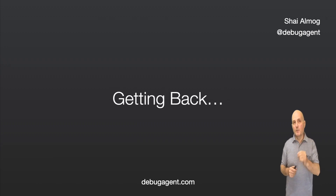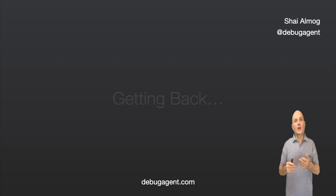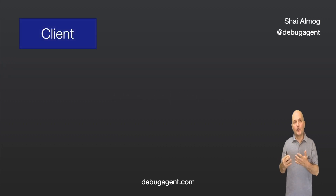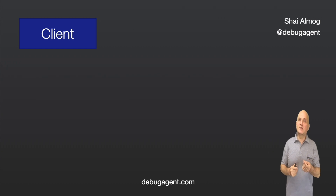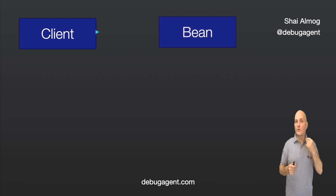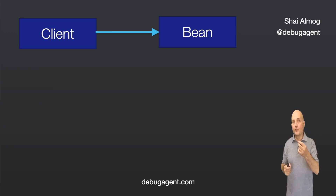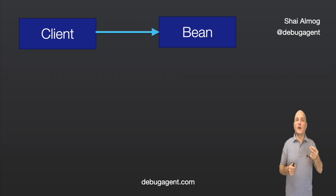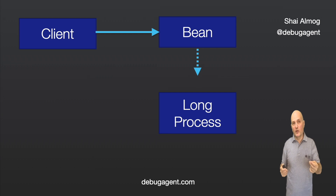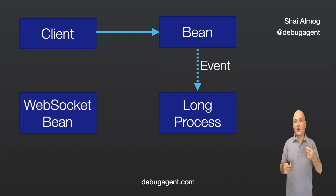The problem with these APIs is in getting the result back to the user. Let's say we have a web browser client that sends a request to a Bean. This is a long-running process, so the Bean decides to send an event to a long-process service. This can take a while. Once it's done, it can in itself send an event to a WebSocket Bean, which can communicate the event to the client's side.